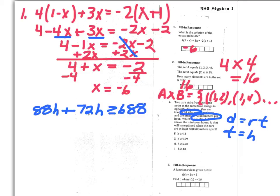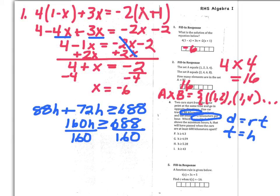So now my next step is to combine like terms on the left hand side, which will give me 88 plus 72 for 160h, greater than or equal to 688. And then divide both sides by 160. And you'll get h is greater than or equal to 4.3, which is choice F.